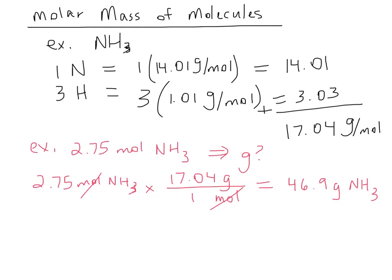The only difference between this and what we were doing before was that instead of dealing with one atom like gold, we're dealing with a molecule of NH3. So we had to add up all the molar masses of 1 N and 3 H's in the top section.